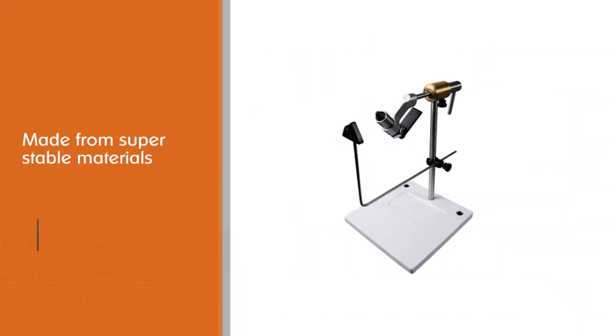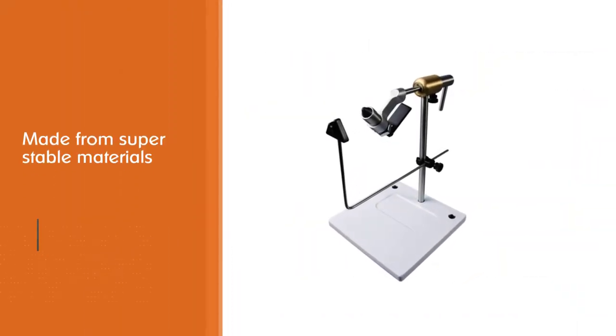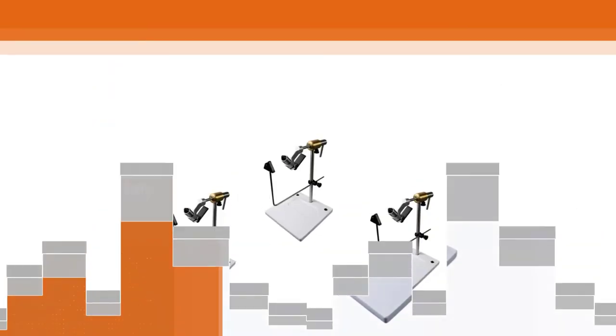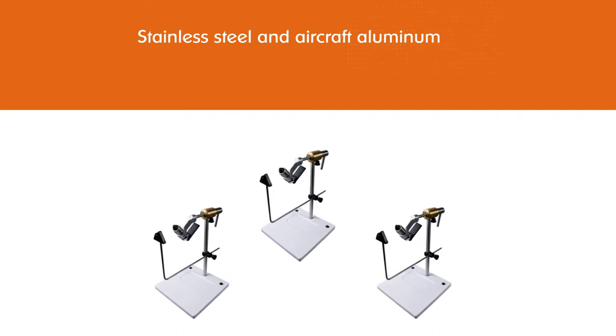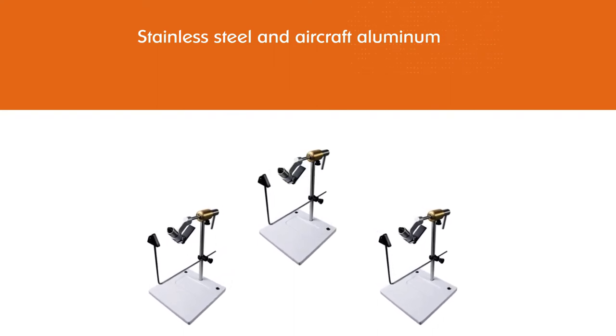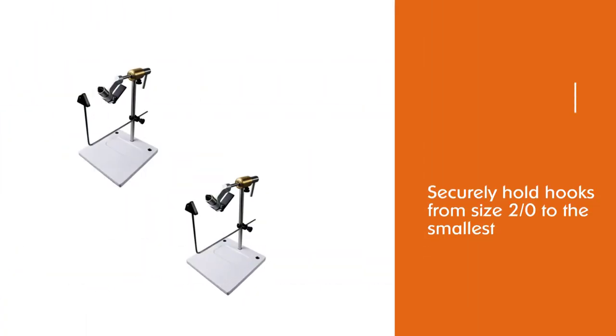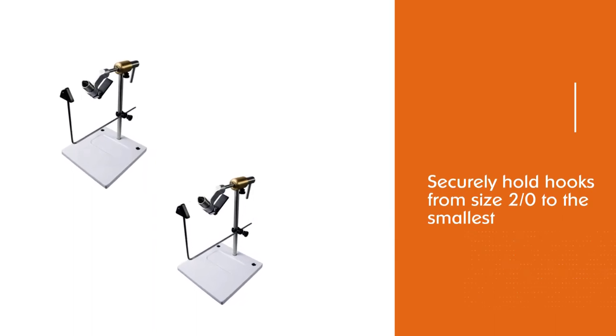It is made from super stable materials including stainless steel and aircraft aluminum. Tempered tool steel jaws securely hold hooks from size 20 to the smallest hooks around. The pedestal base is heavy and stable and holds the vice in place safely.